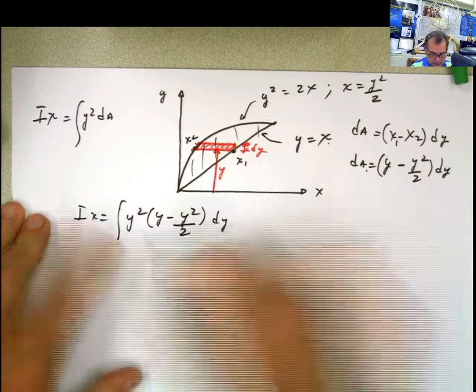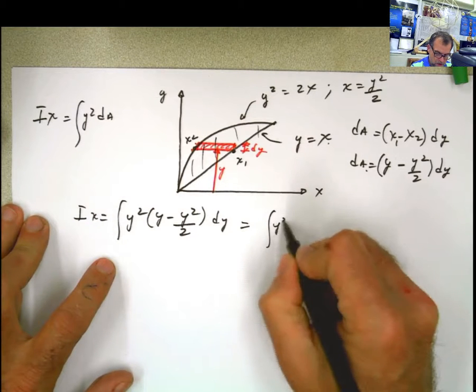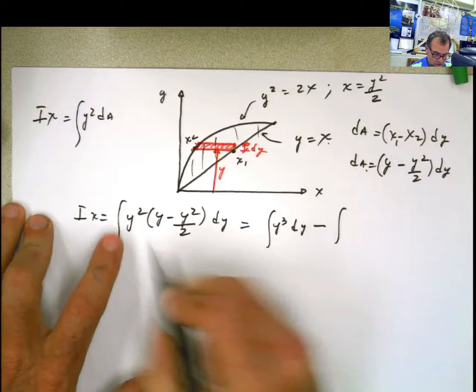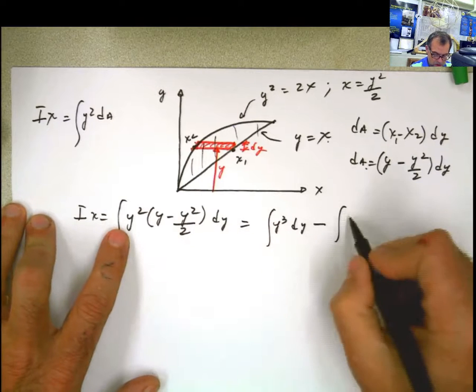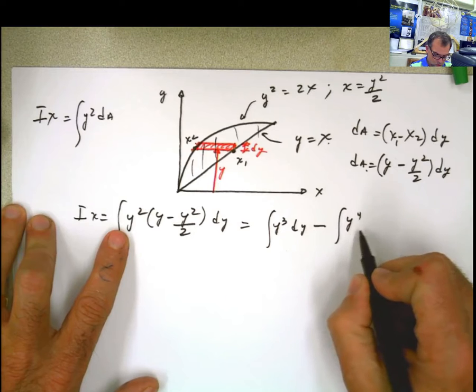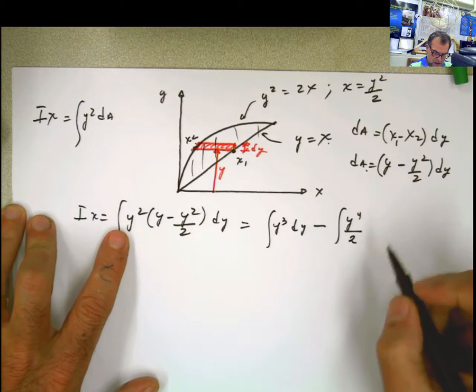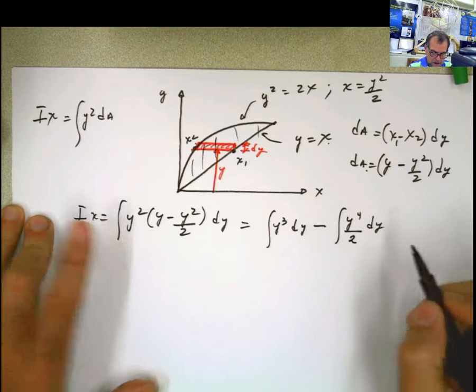Ix equals the integral of y squared multiplied by this, which is y minus y squared divided by 2 dy. Solve the integral, separating two integrals: integral of y to the third dy minus the integral of y squared times y squared, which is y to the fourth divided by 2 dy.